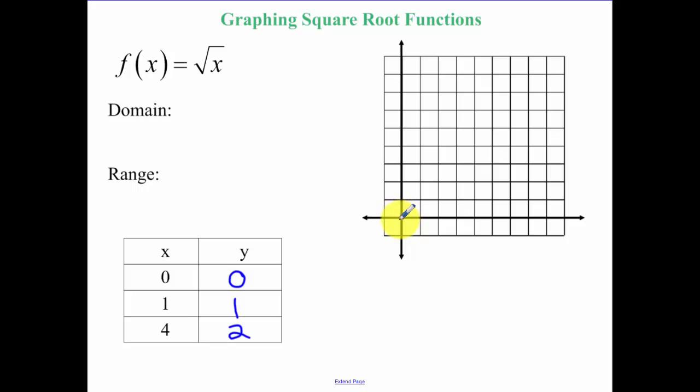So we have 0, 0, 1, 1, and then 4, 2. You could also do 9 and 3 because the square root of 9 is 3. So that just gets you another point. Really, when we're graphing, we're just going to be translating these first three points.